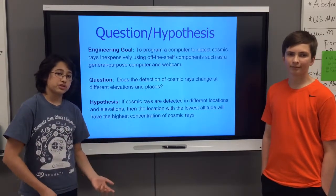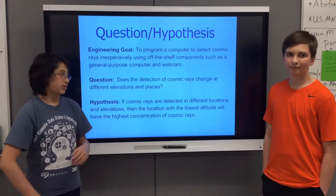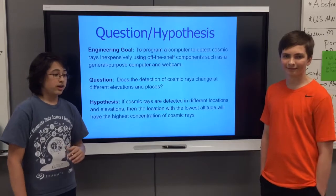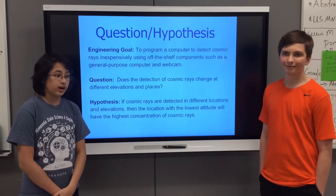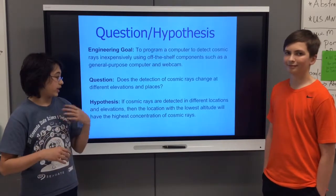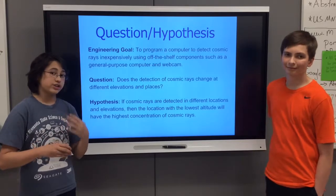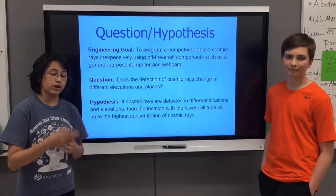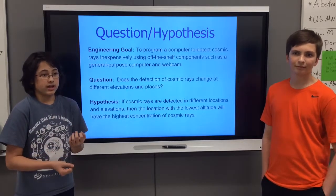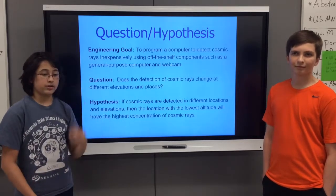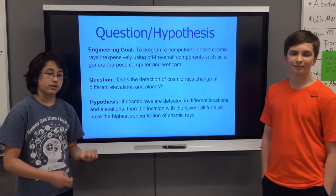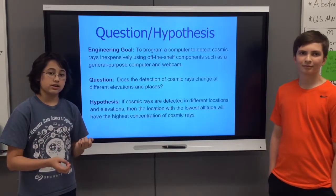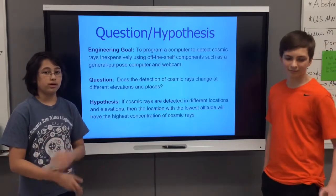Our question was: does the detection of cosmic rays change at different elevations and places? Our hypothesis is that if cosmic rays are detected at different locations and elevations, then the location with the lowest elevation will detect the most cosmic rays, because when cosmic rays hit the atoms in our atmosphere it creates a secondary cascade of particles called muons, and we can pick those up and there will be more of them.